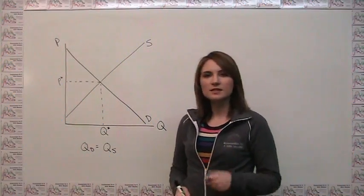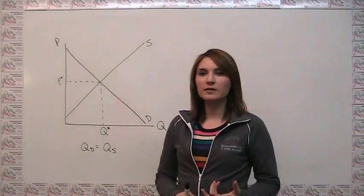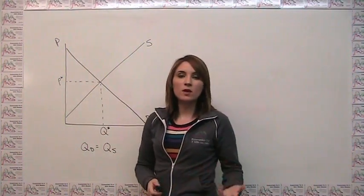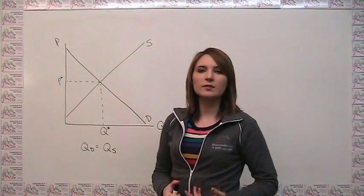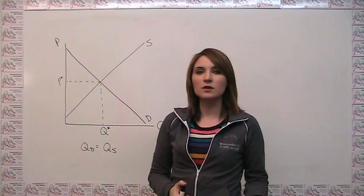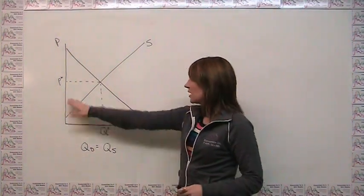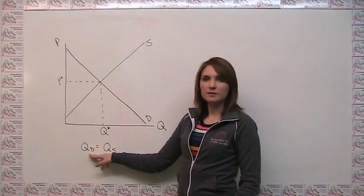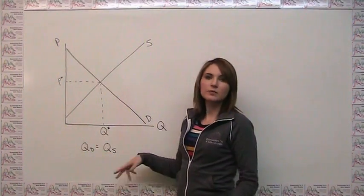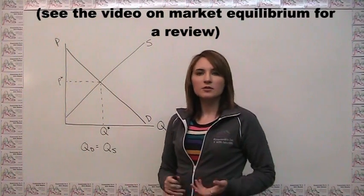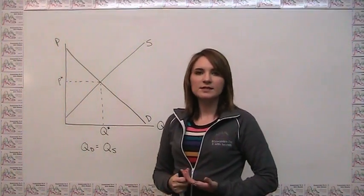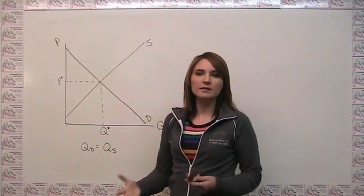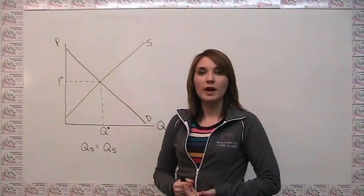Up until now, we've discussed supply and demand in a free market where prices adjust to the level where everybody that wants to purchase something at the prevailing market price can actually do so, because we have a condition at free market equilibrium where the quantity demanded and the quantity supplied are the same. Now we're going to look at various government policies that move markets away from this equilibrium outcome and analyze what happens to demand and supply.